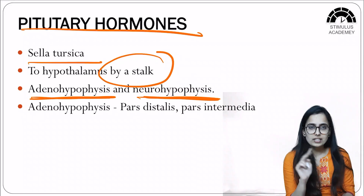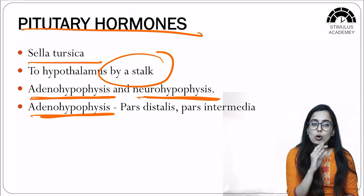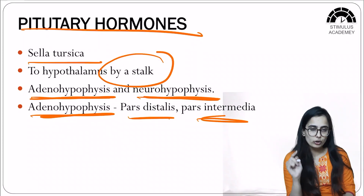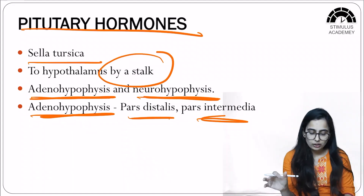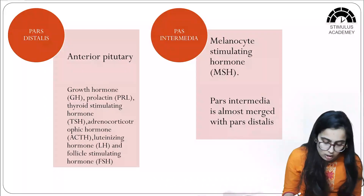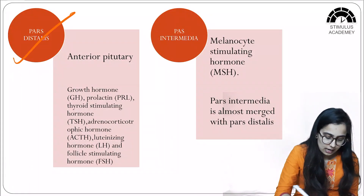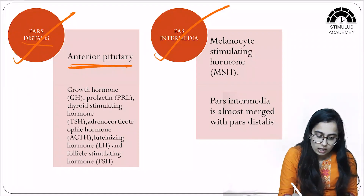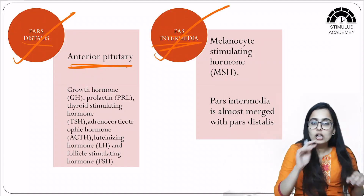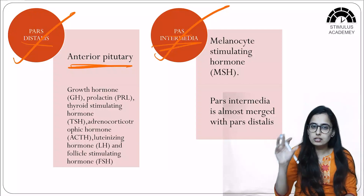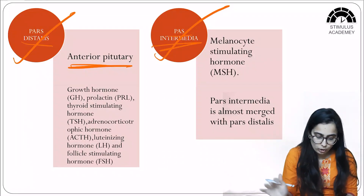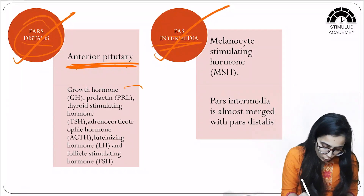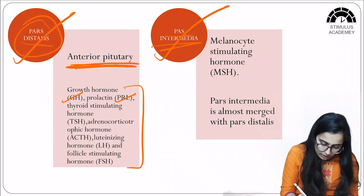The pituitary is divided into two parts: adenohypophysis and neurohypophysis. The adenohypophysis is further divided into two parts based on location: pars distalis and pars intermedia. Pars distalis is also known as the anterior pituitary, and it secretes growth hormone, prolactin, thyroid stimulating hormone (TSH), adrenocorticotrophic hormone (ACTH), luteinizing hormone (LH), and follicle stimulating hormone (FSH).